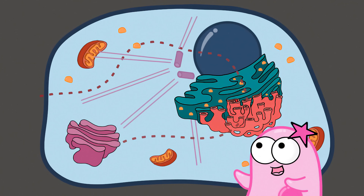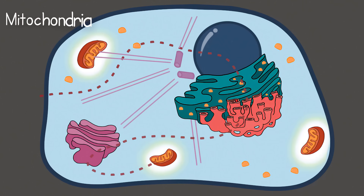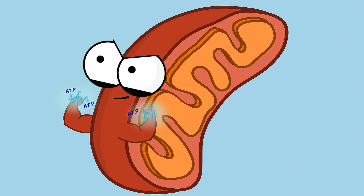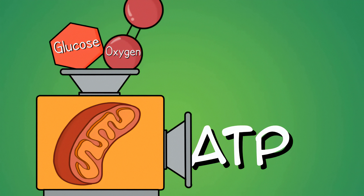With all that's going on in here, you might start to wonder, what's powering this thing? The mighty mitochondria — or mitochondrion, if you're talking about just one. They're like power plants. The mitochondria make ATP energy in a process called cellular respiration. It runs on glucose — which is a sugar — and it needs the presence of oxygen to efficiently make ATP energy.